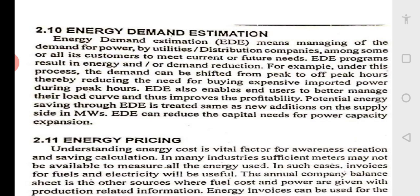This is one example I am citing for energy demand estimation. The distribution company like Hescom supplies power to all consumers. There are three entities involved: first, energy generation companies like Karnataka Power Corporation or Nuclear Power Corporation; second, transmission companies like KPTCL — Karnataka Power Transmission Corporation Limited — which transfer power from the generating station to the region; and third, distribution companies like Hescom, which distribute power locally throughout areas like Karwar.